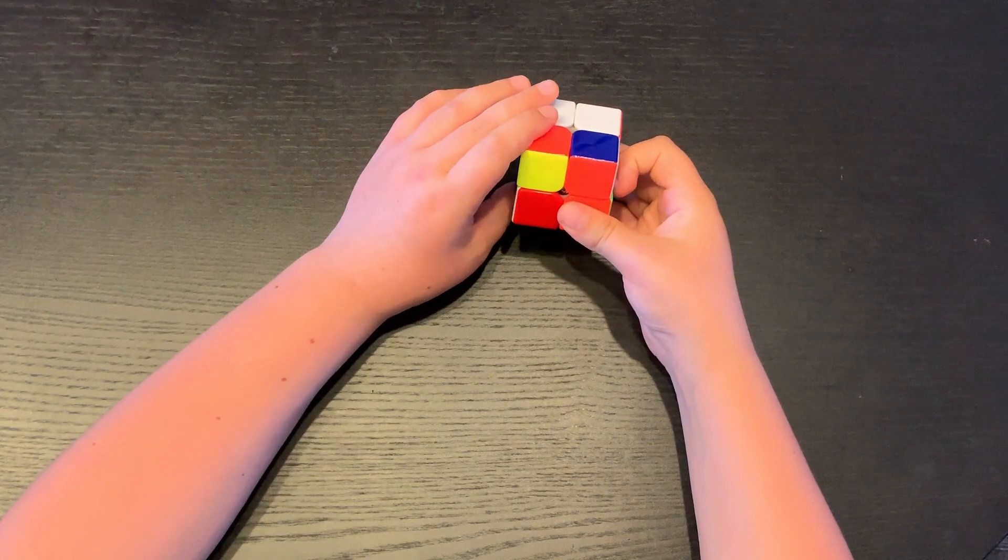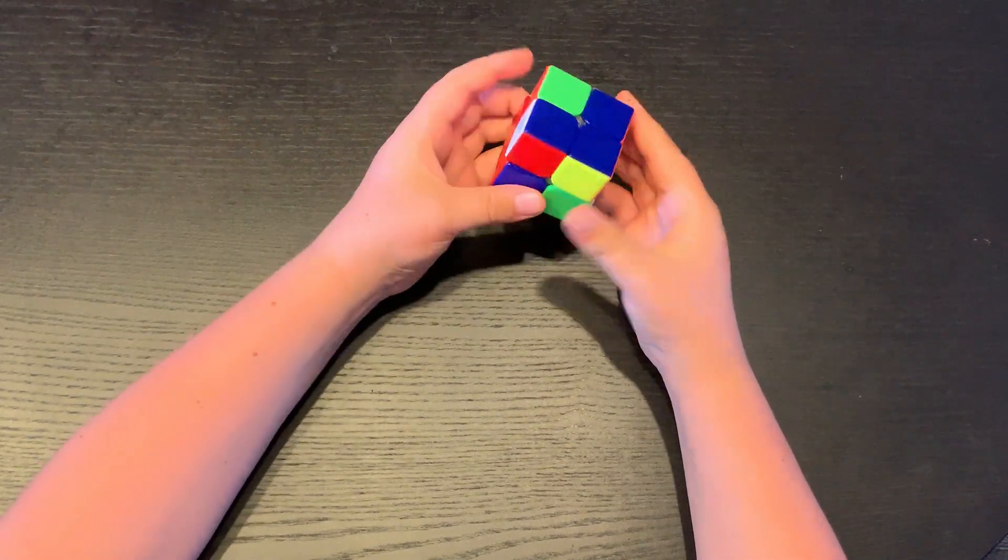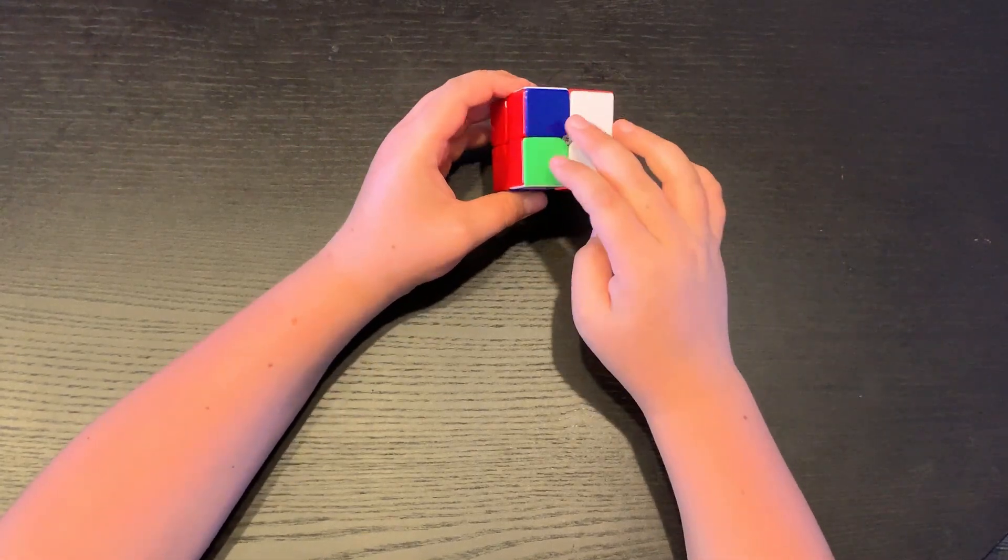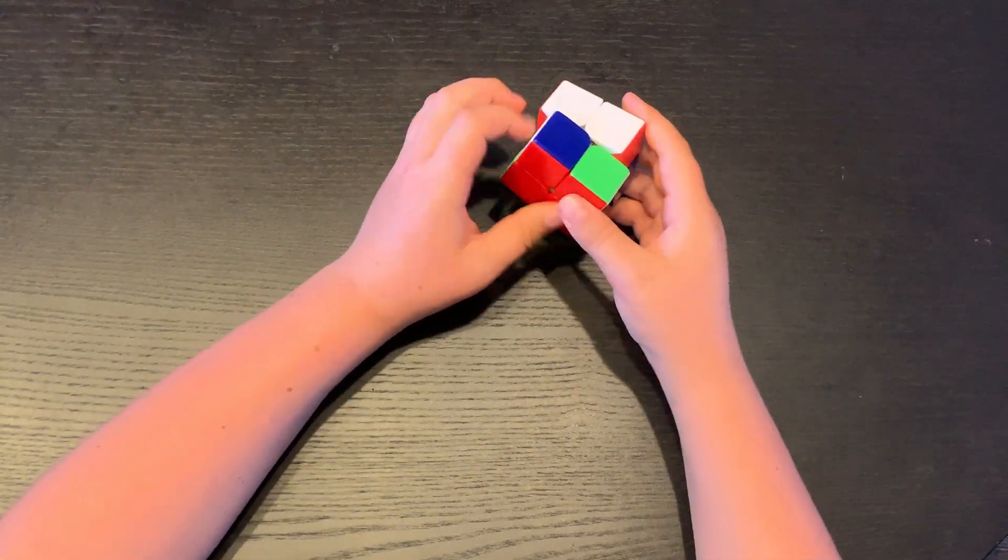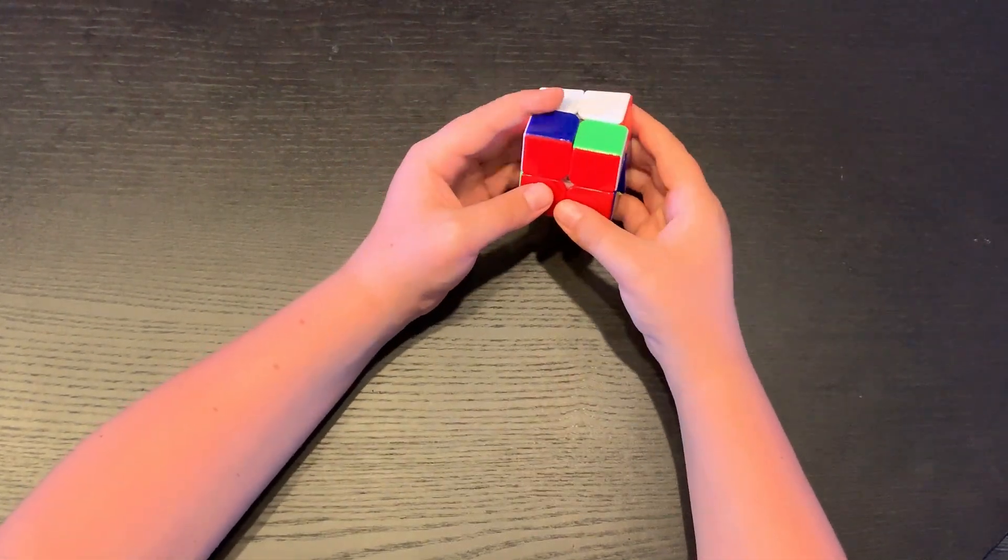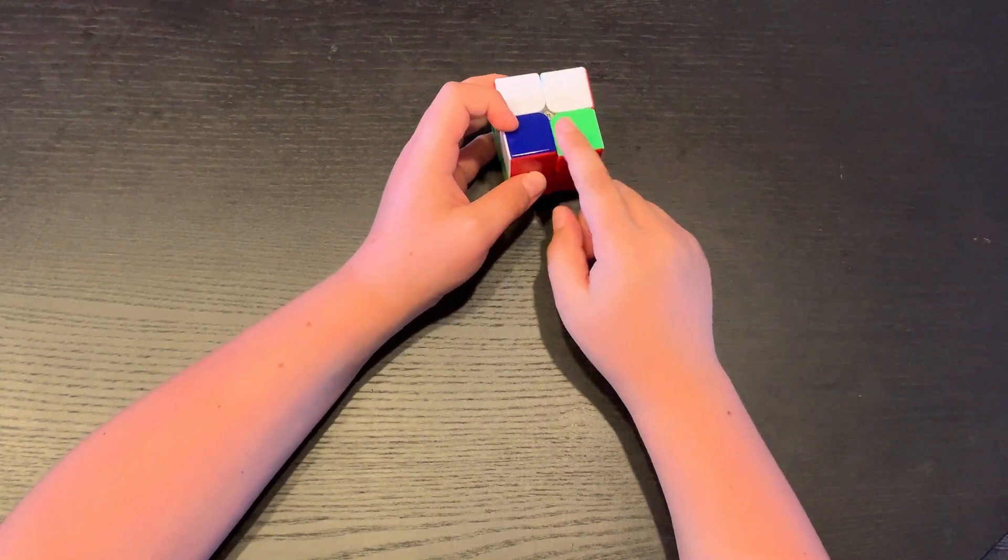And just keep on doing that same algorithm until you have your pair and you can easily insert it. But now see, you have your other two flipped. So first they were flipped towards you, and now they're flipping out this way.